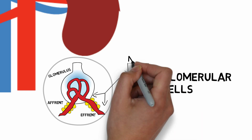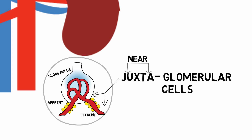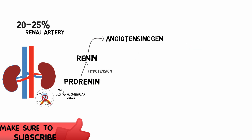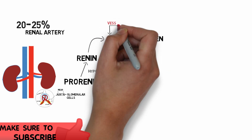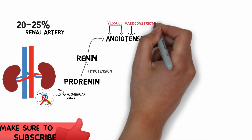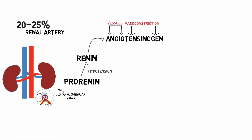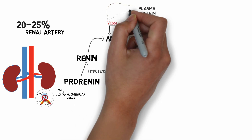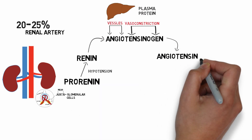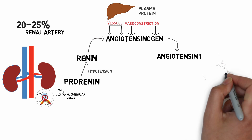These cells are the juxtaglomerular cells. The word juxta means near, and these cells are located near the glomerulus. These cells secrete a substance known as pro-renin, and hypotension is the main stimulator of converting pro-renin into renin. Renin is an enzyme which acts on angiotensinogen — the word angio means vessels, the word tensinogen means a substance which constricts the vessels. It is a plasma protein which is synthesized in the liver.